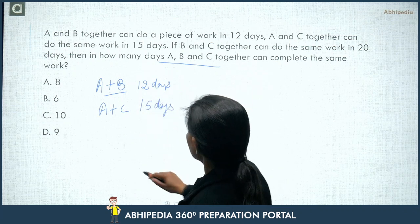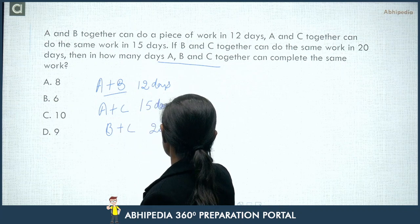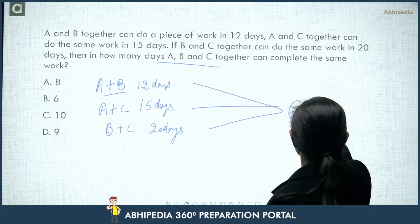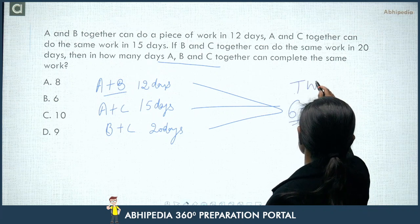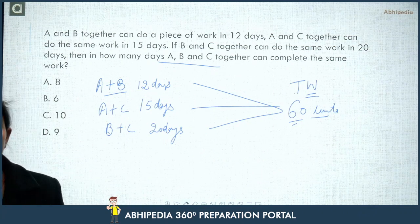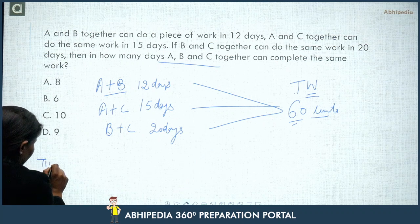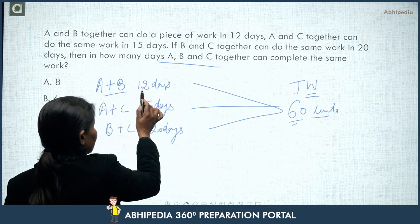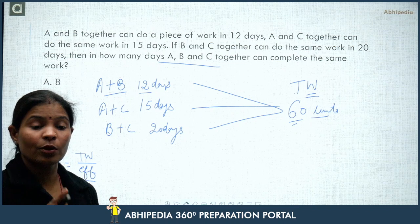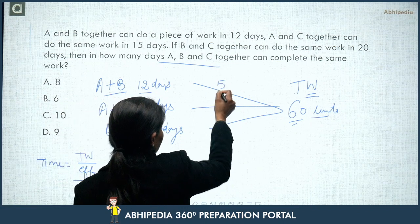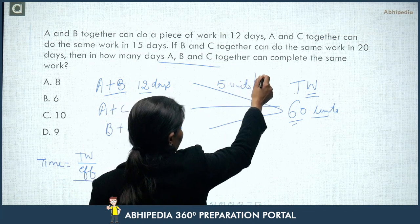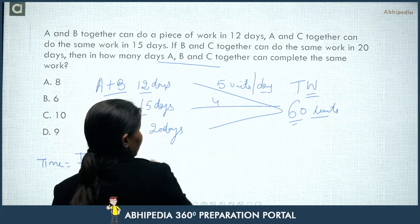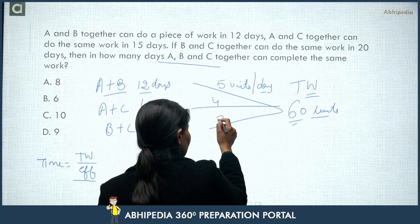A and B take 12 days, A and C take 15 days, B and C take 20 days. Taking the LCM of 12, 15, and 20 — a number divisible by all three — we get 60. So total work = 60 units. Now: A+B efficiency = 60/12 = 5 units/day. A+C efficiency = 60/15 = 4 units/day. B+C efficiency = 60/20 = 3 units/day.